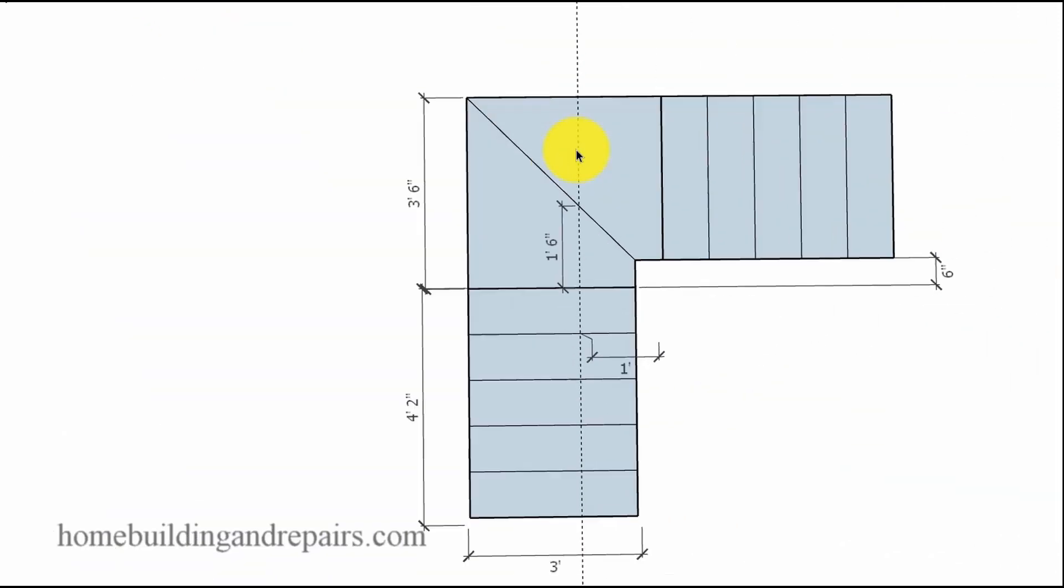If we modify the stairway and make it a little longer here to give us our six inches, it's going to create a longer walk line. One foot six inches instead of one foot. Which makes sense - we just added six inches to it.